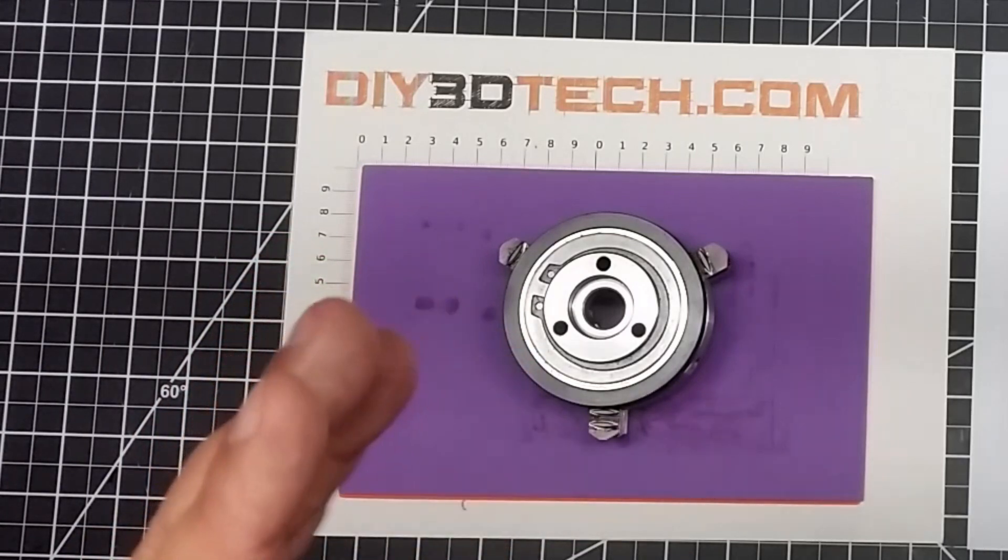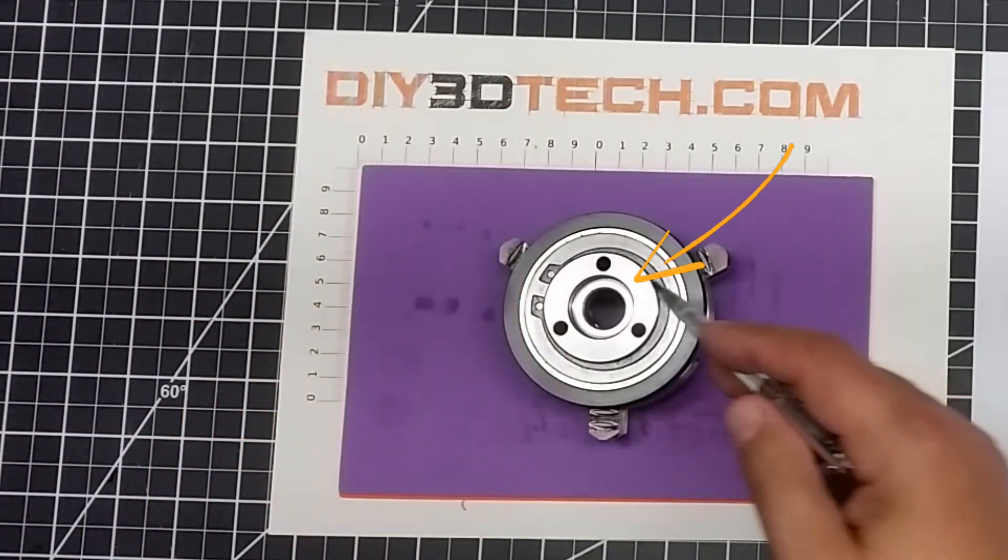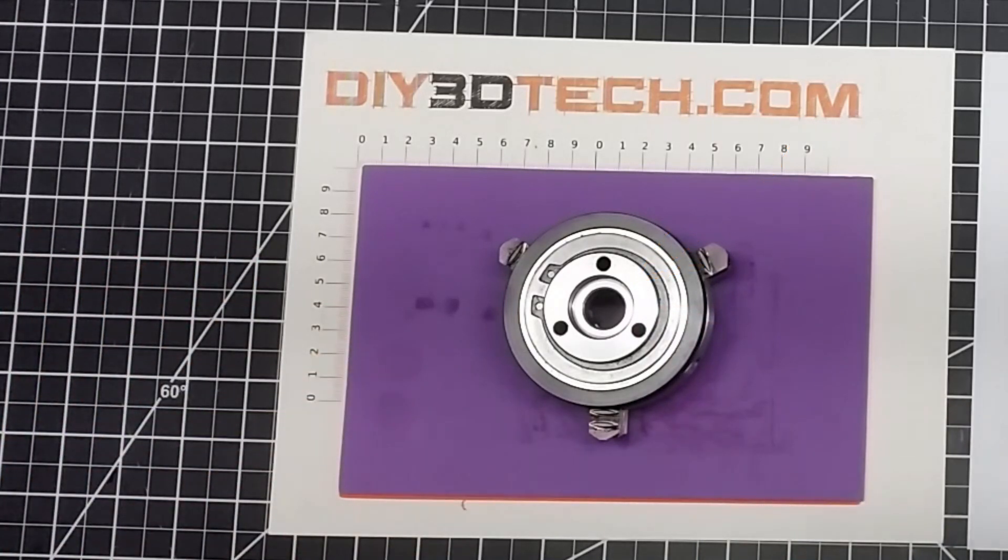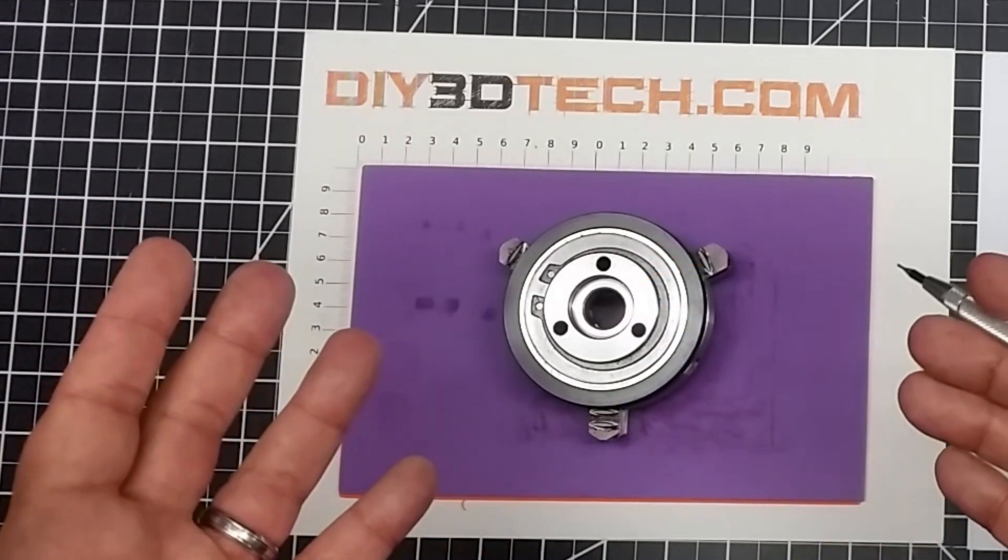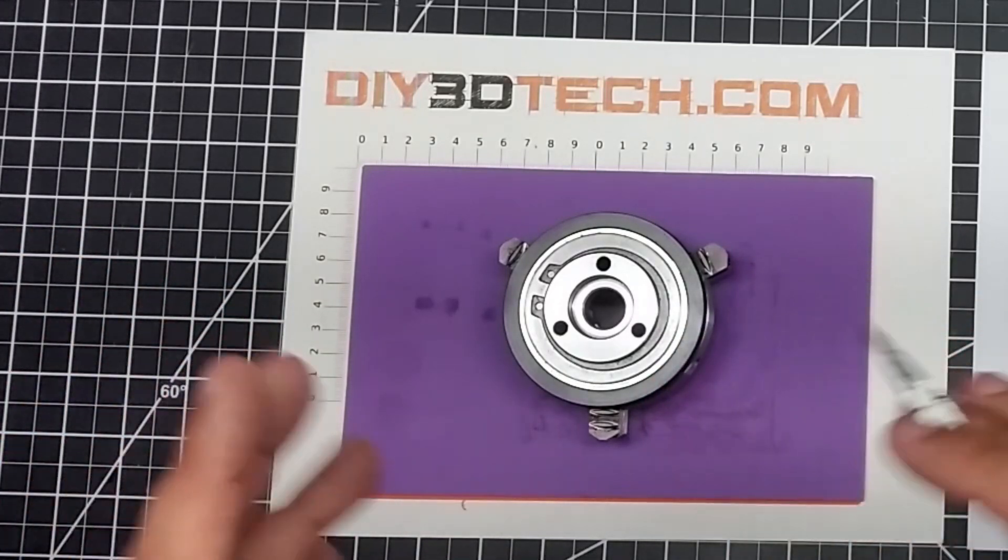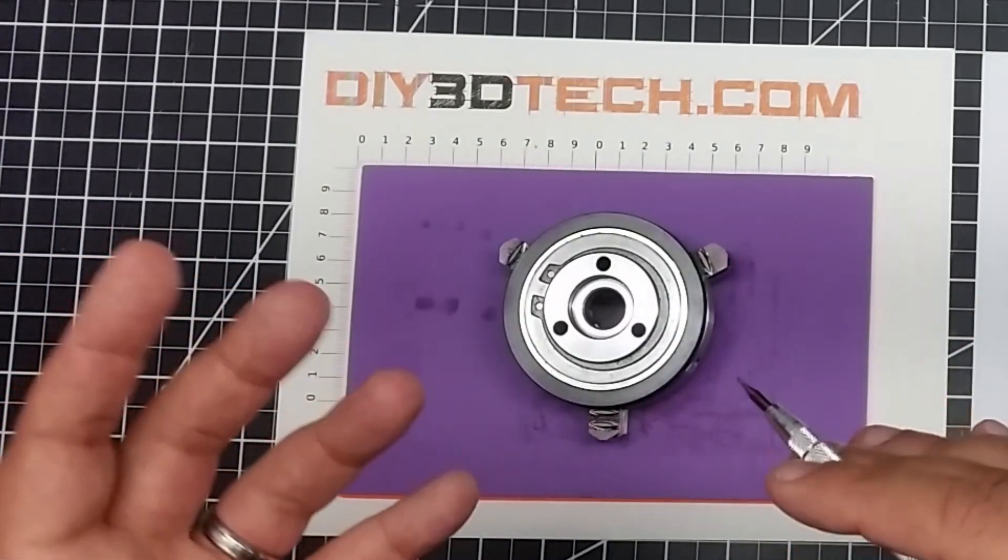A pitch circle diameter is the imaginary circle that runs through the center of these mounting holes in a flange. I have my chuck here, and this is what started this project. I got this chuck in, did a review on it, and I need to come up with a fixture plate to mount it to the CNC.